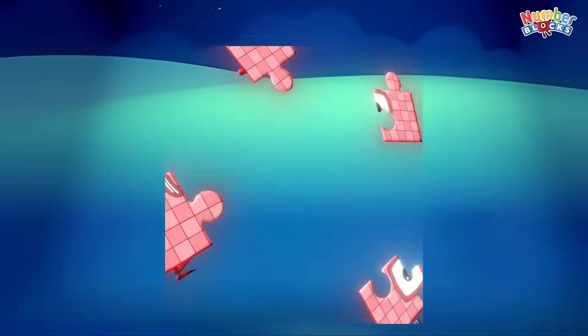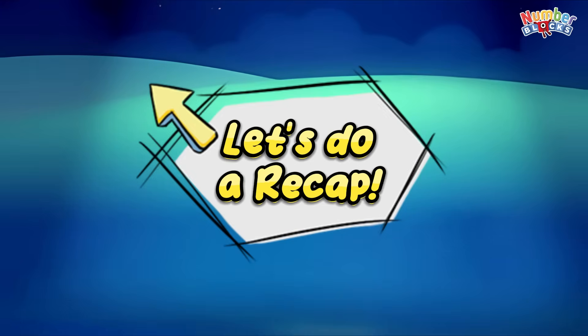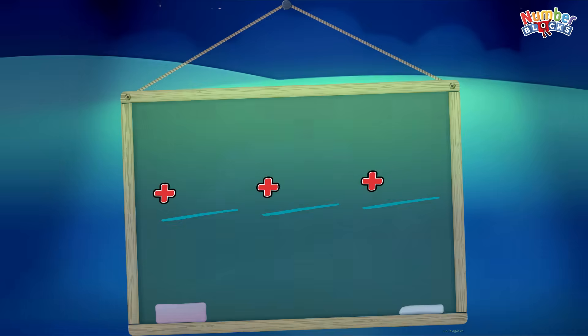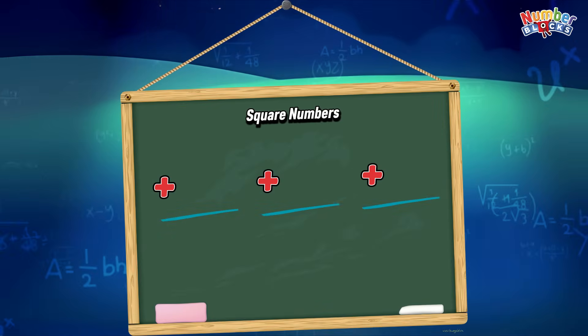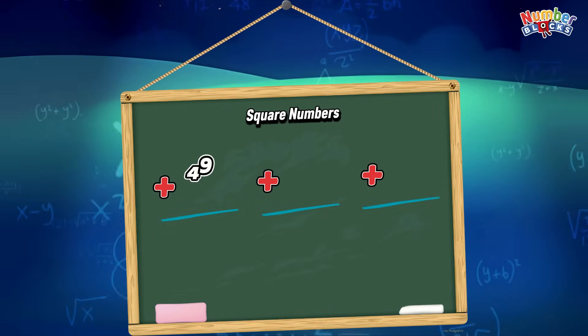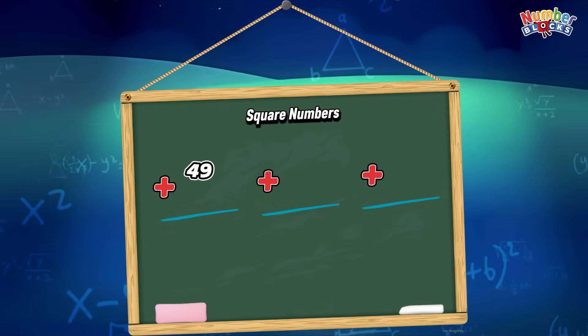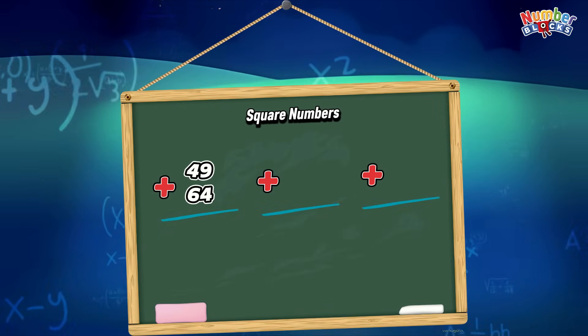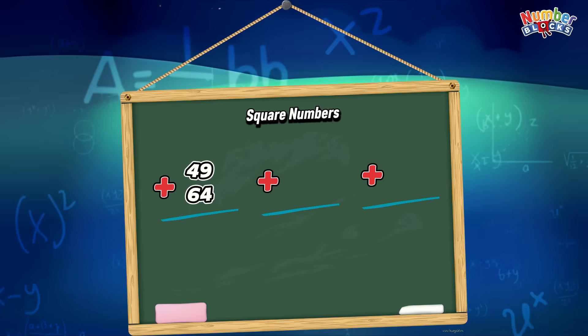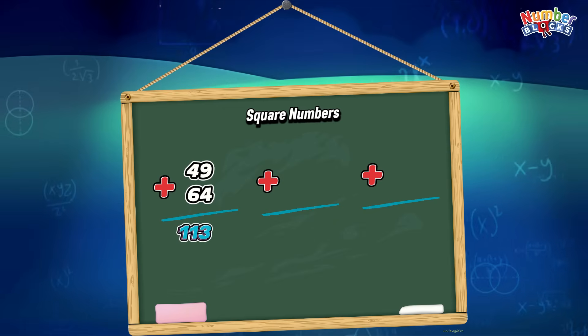And now, let's do a recap. Join me. Let's begin square numbers. 49 plus 64 is equals to 130.